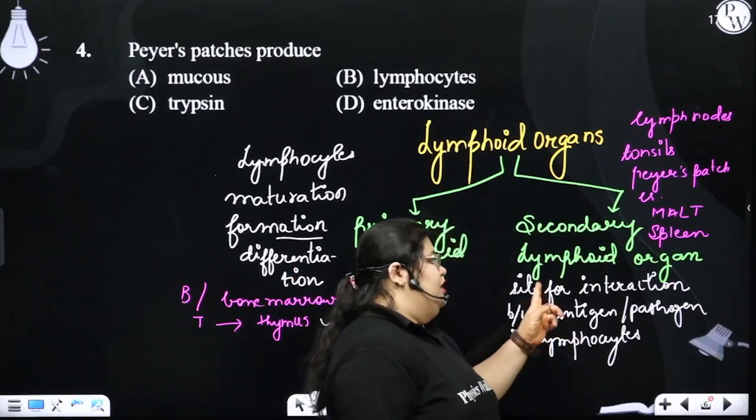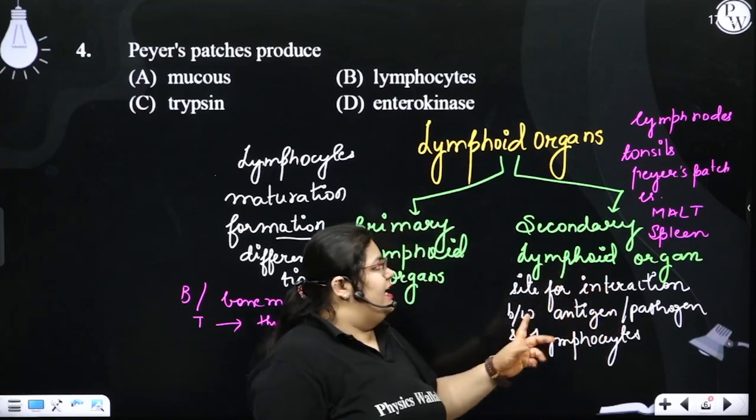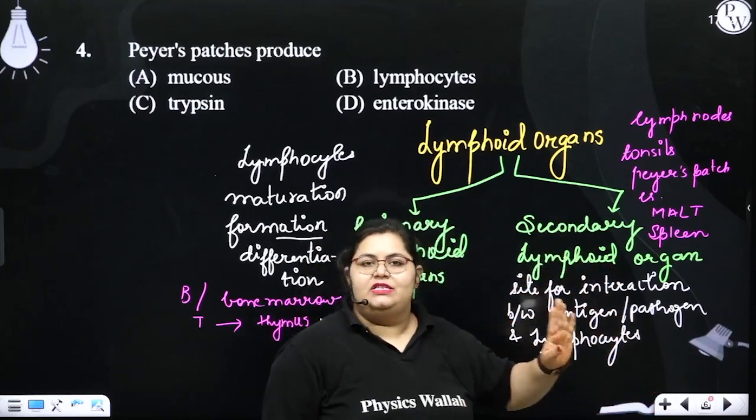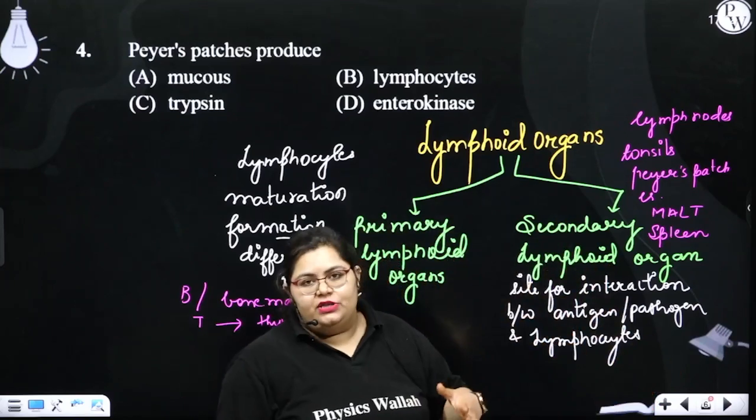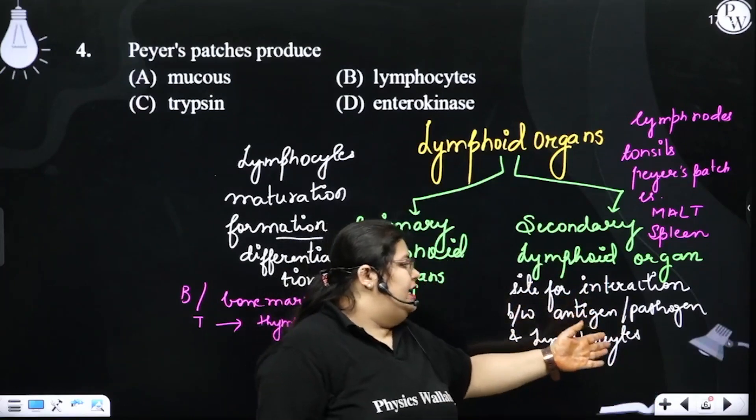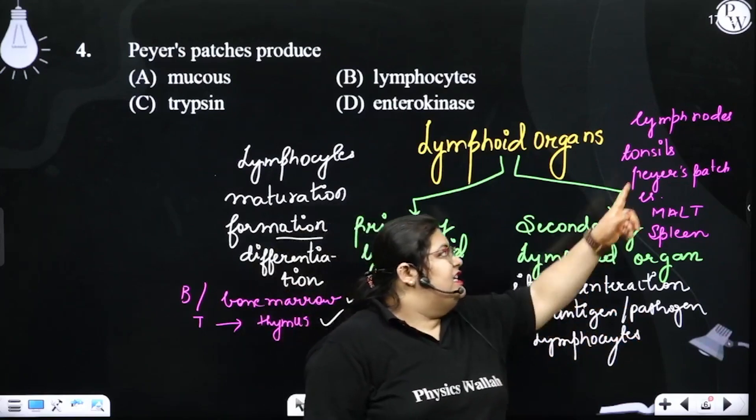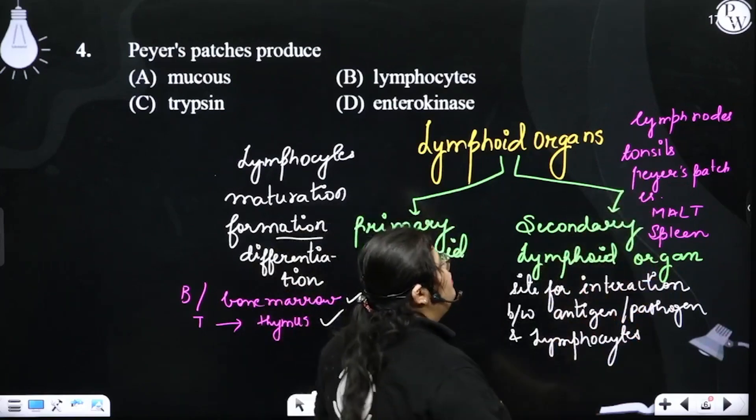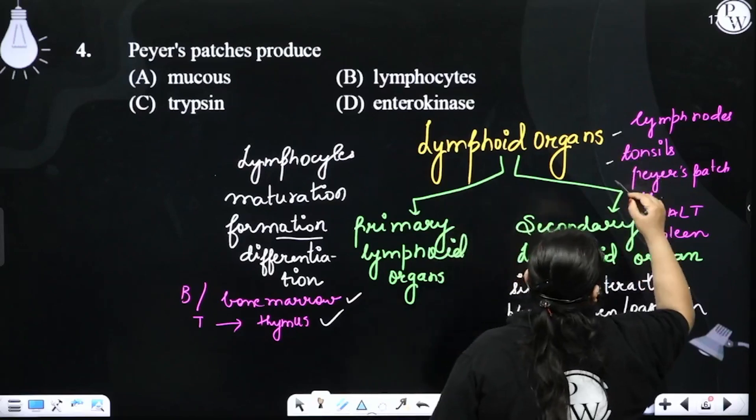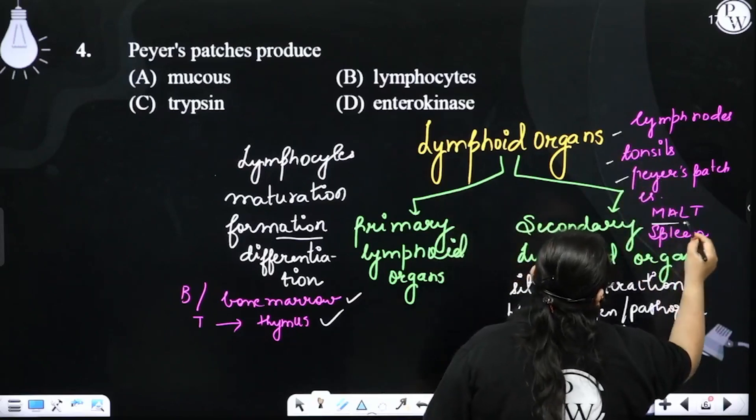Here we have to migrate the lymphocytes to secondary lymphoid organs, where proliferation, clones, or antigen or pathogen and lymphocytes interaction occurs. Secondary lymphoid organs include lymph nodes, tonsils, appendix, Peyer's patches, spleen, etc.